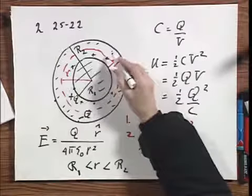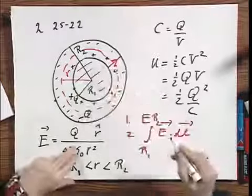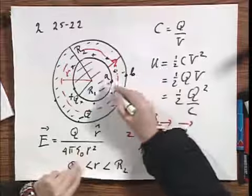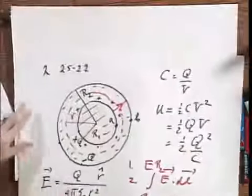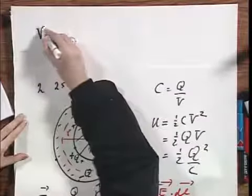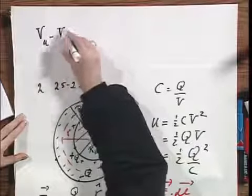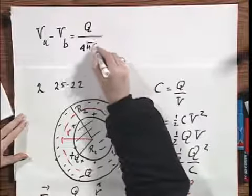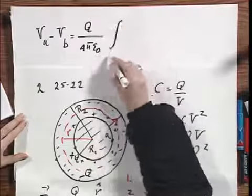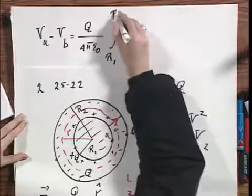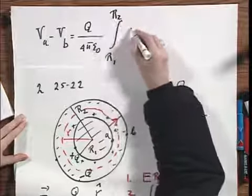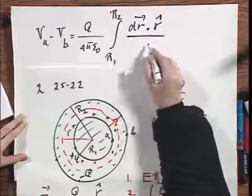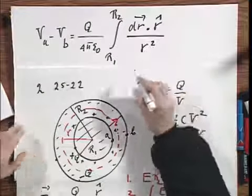Now we want to do the potential difference. Let me call this point A and let me call this point B. It doesn't matter how I go from the inner sphere to the outer sphere. So I call it just VA minus VB. That is now Q divided by 4π epsilon 0 times the integral from R1 to R2.